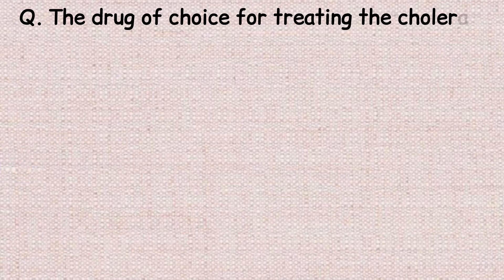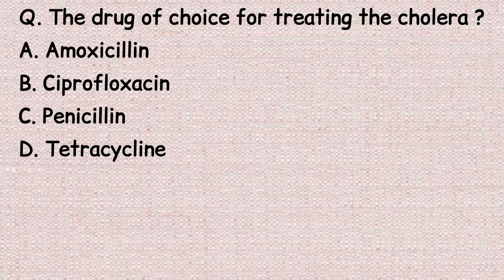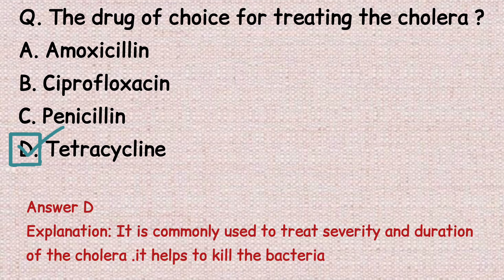The next question: what is the drug of choice for treating cholera? Option A: amoxicillin. Option B: ciprofloxacin. Option C: penicillin. Option D: tetracycline. The correct answer is option D, tetracycline. It is commonly used to reduce the severity and duration of cholera, as it helps to kill the bacteria.